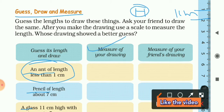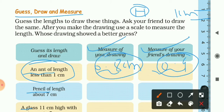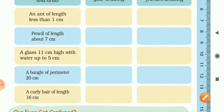Here you record the measure of your drawing and the measure of your friend's drawing in centimeters. This activity is completely a gaming activity — you can play with your friend. After drawing the objects, you write their lengths. For example, the drawing of the ant you drew was 0.8 centimeter and your friend's was 0.9 centimeter, so your friend was closer to one centimeter. Similarly you can draw a pencil, glass, bangle, and curly.